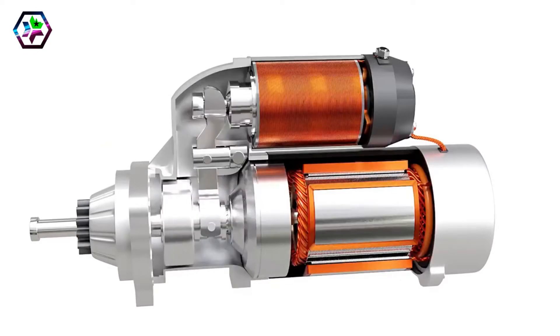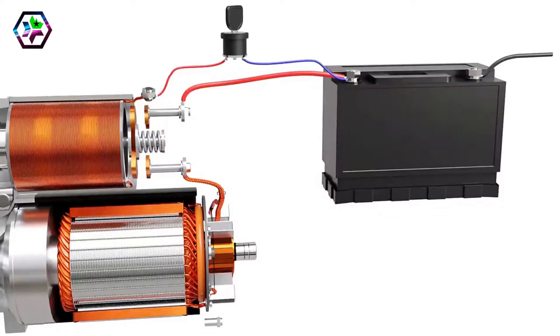The model shown here is a pre-engaged type starter motor used in modern vehicles. It uses an electric motor to provide torque to the crankshaft. The power for this motor can be drawn from the battery.